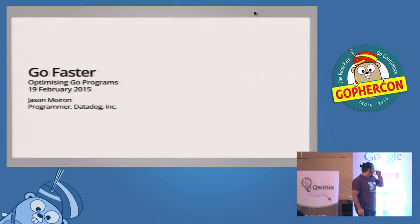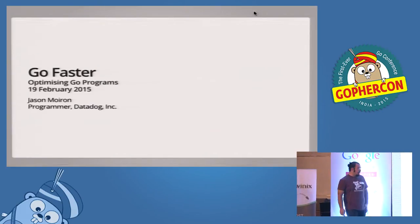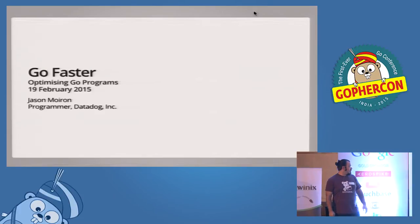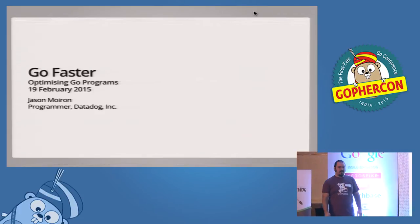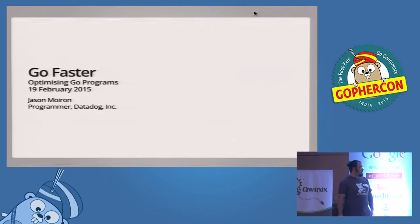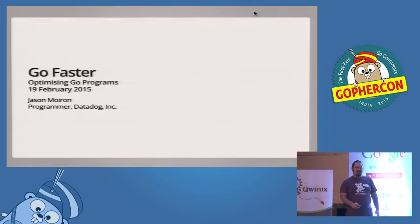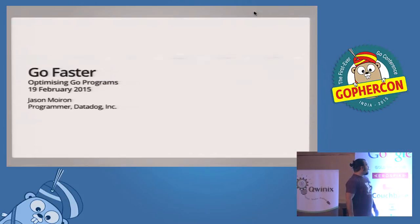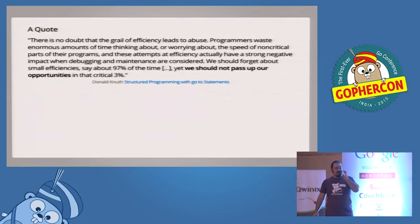My name is Jason, I'm a programmer at Datadog in New York City, and I'm here to talk about optimizing Go programs. I have a lot of slides to get through so it's going to be kind of quick — hopefully everyone can follow along. I want to start with a quote.